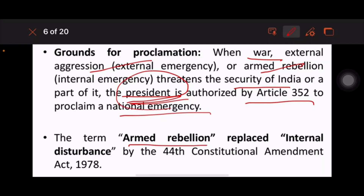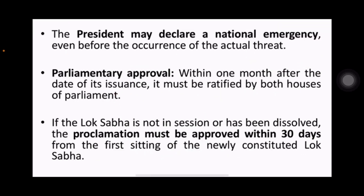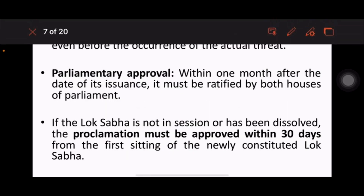The term 'armed rebellion' replaced 'internal disturbance' by the 44th Constitutional Amendment Act, 1978. The president may declare a national emergency even before the occurrence of the actual threat. Parliamentary approval must be obtained within one month after the date of its issuance, and it must be ratified by both houses of parliament.